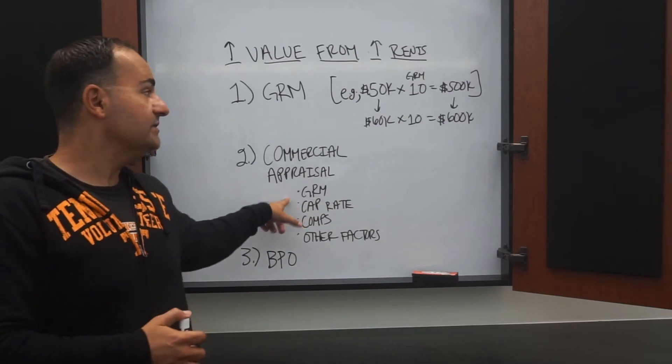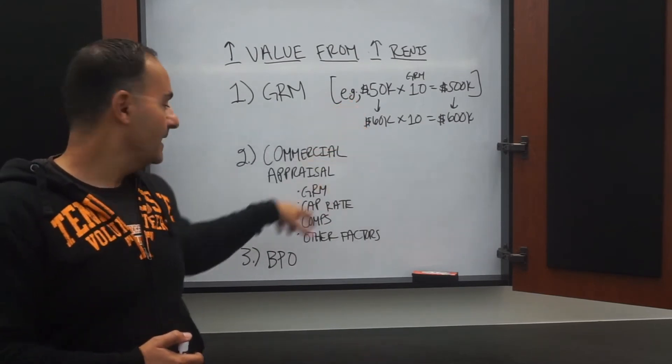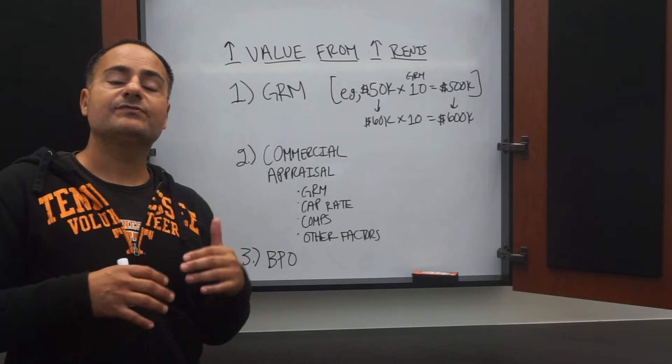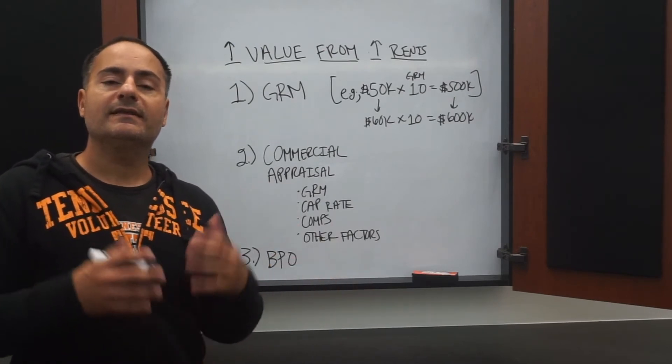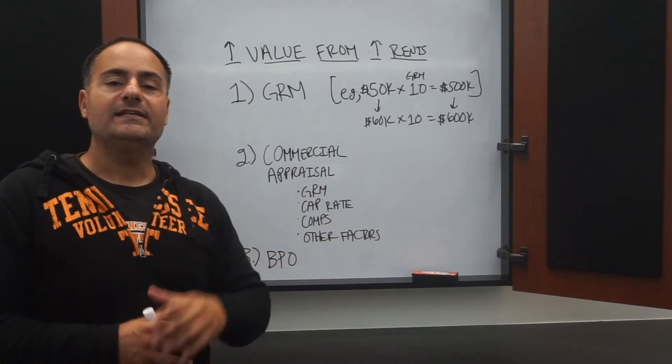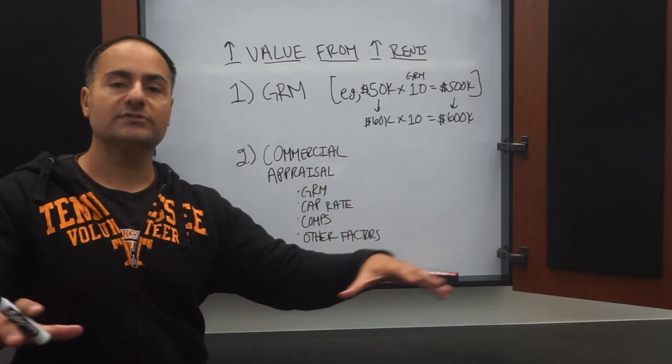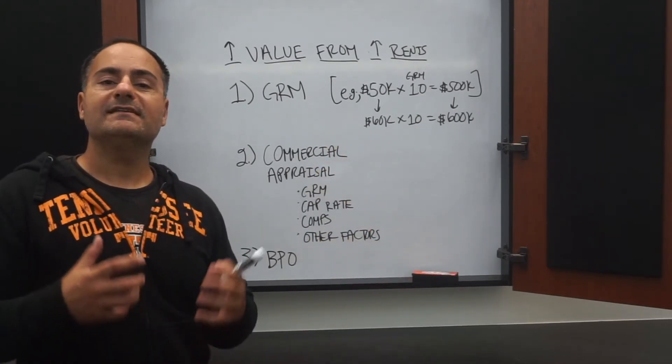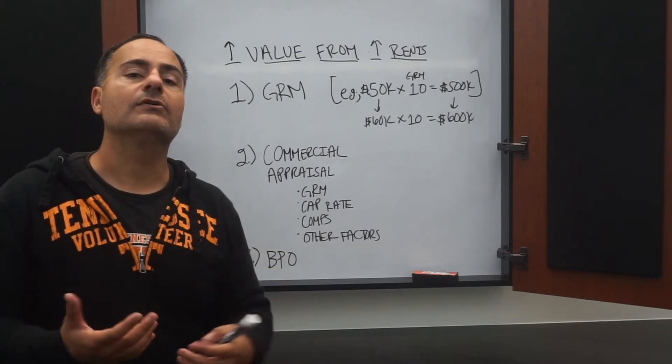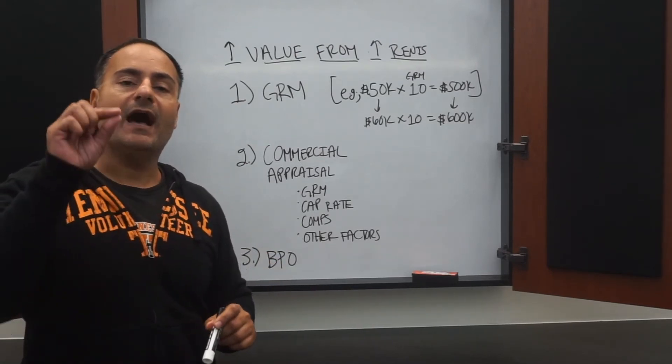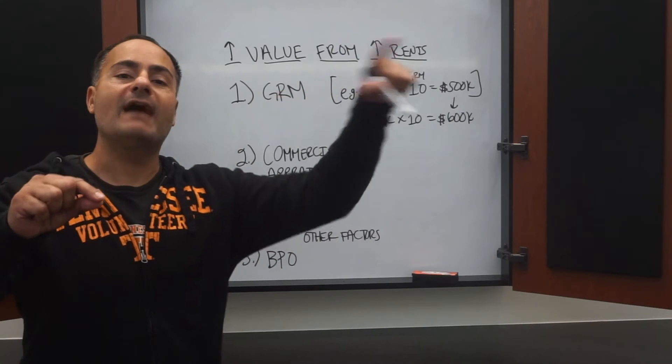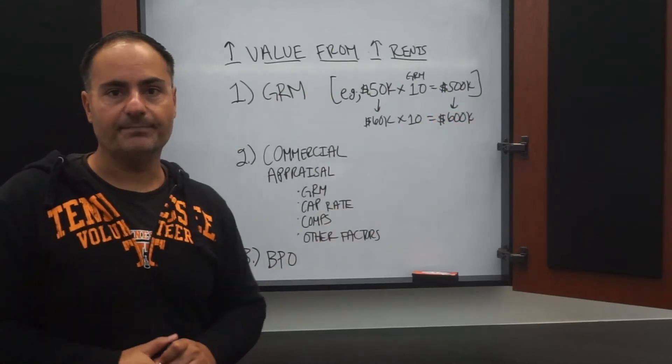And how are they going to do that? They're going to look at GRM, which is what we just talked about. Then they'll look at cap rate, which stands for capitalization rate. But the cap rate—you can write this down—is your net operating income over your total purchase price. So what that means is it's basically a rate of return on your money, and the higher the cap rate, the higher the valuation of that property.